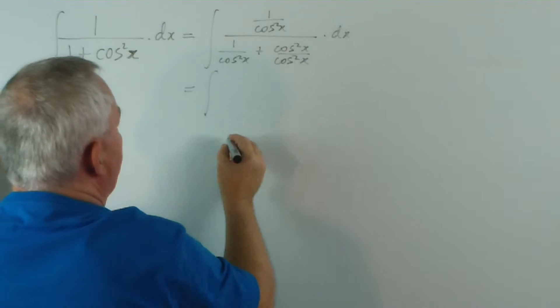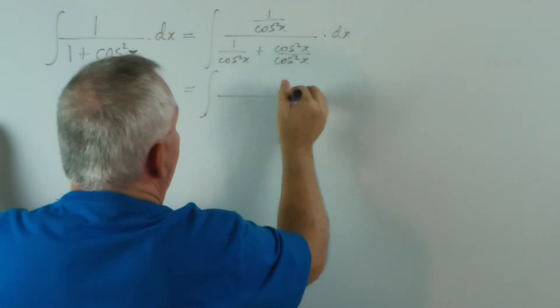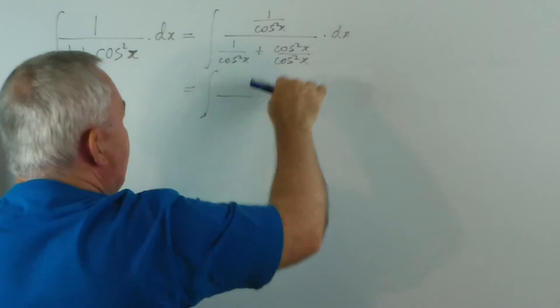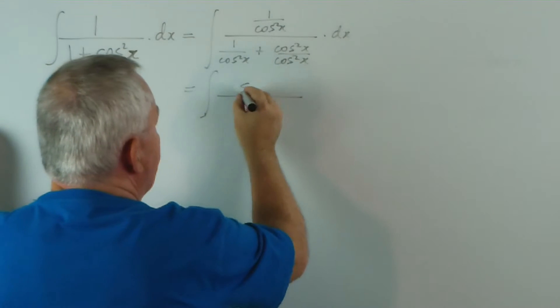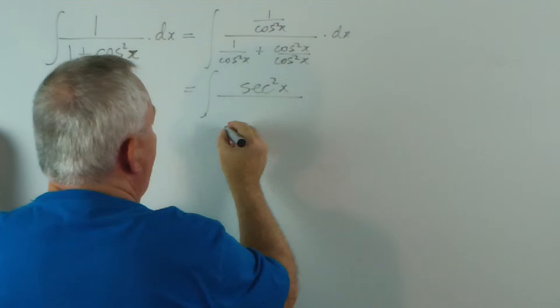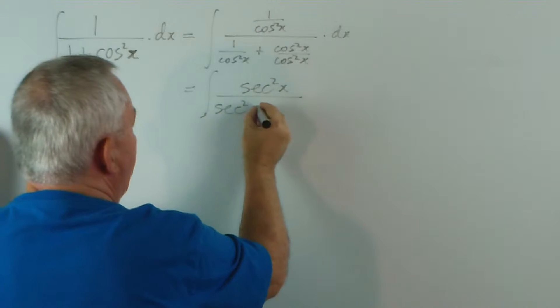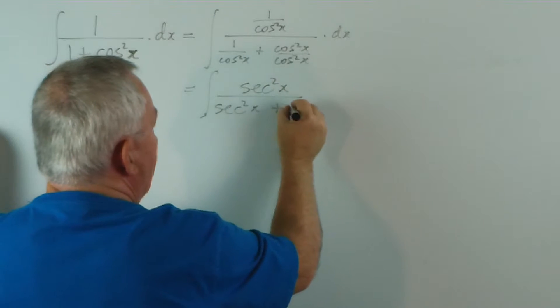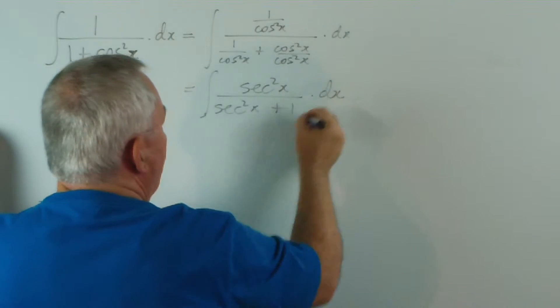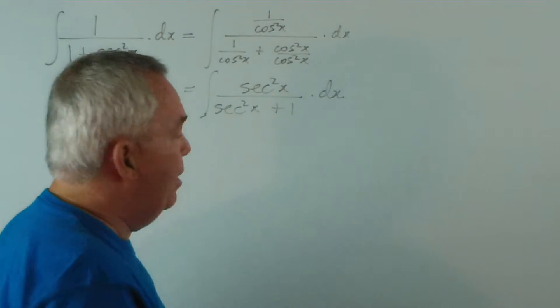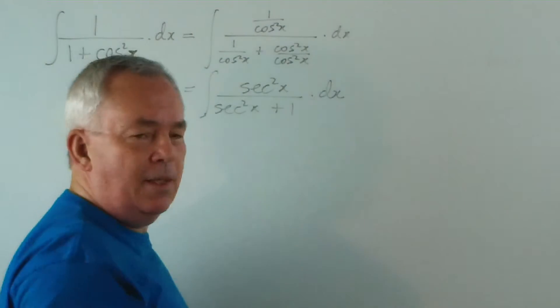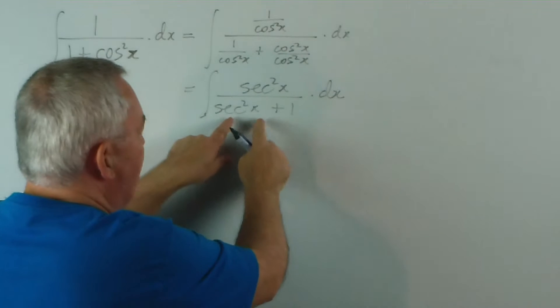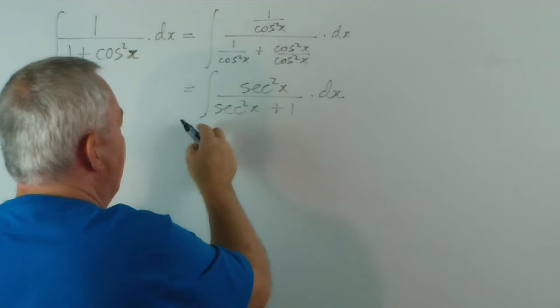And what does that give us? The reciprocal ratio for cos x is sec x, so this is going to be sec squared x. This is going to be sec squared x, and this is going to be 1. Now already, this part of the pattern looks like the derivative of tan x. Can we change this into some expression with tan x? And the answer is yes, we can.